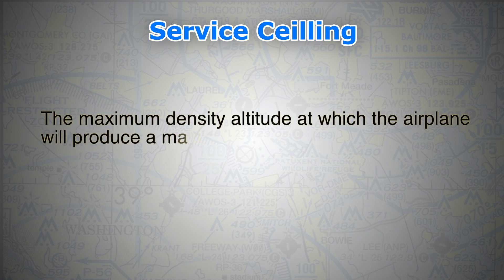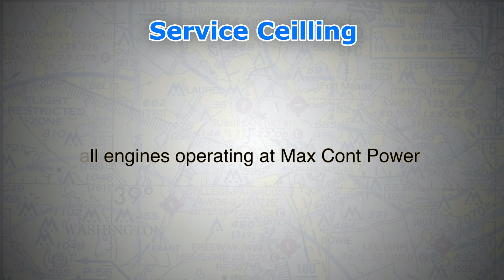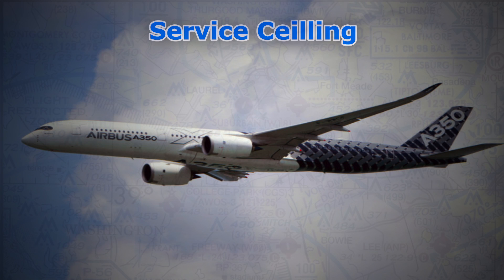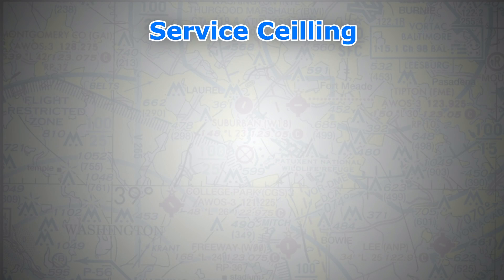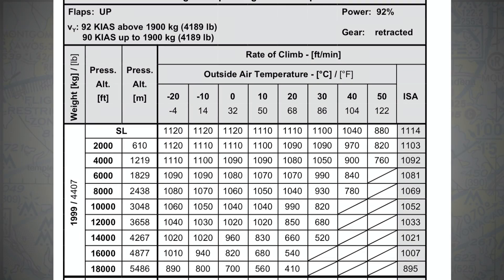Firstly, service ceiling. By definition, it is the maximum density altitude at which the airplane will produce a maximum 100 feet per minute rate of climb with all engines operating at maximum continuous power, or MCP for short. For jetliners, however, this value increases to 500 feet per minute. As we can see in this table, at sea level and ISA conditions, the engines produce 1,114 feet per minute rate of climb at maximum takeoff weight. However, at 18,000 feet, this value drops to about 900 feet per minute only, even though power is set at maximum continuous power.